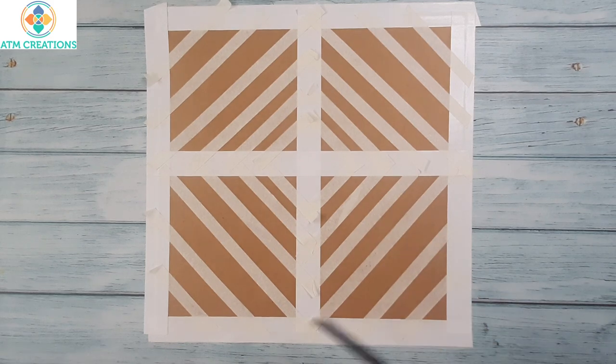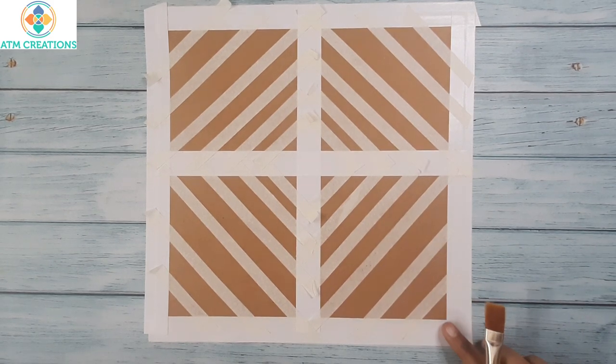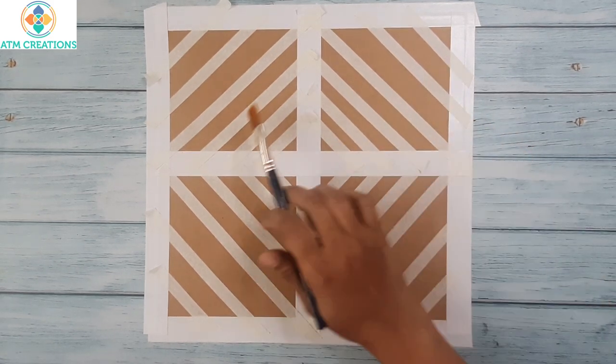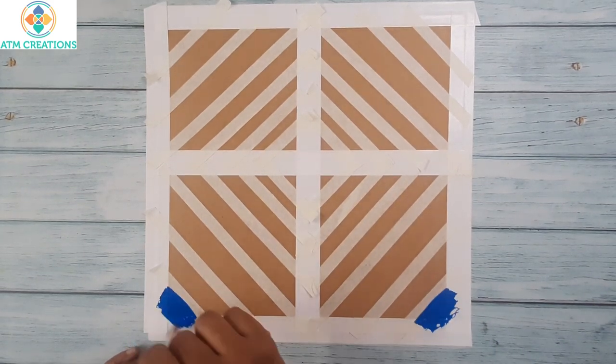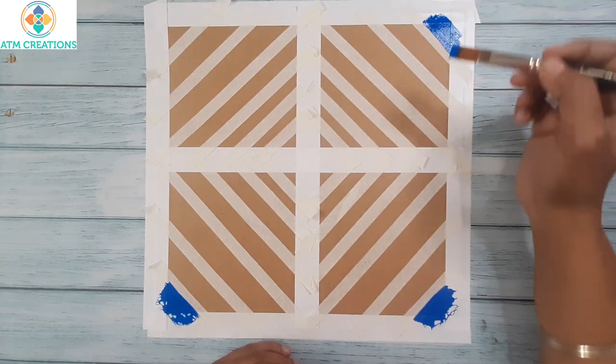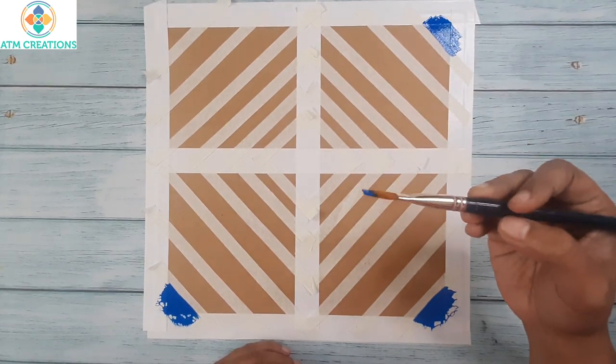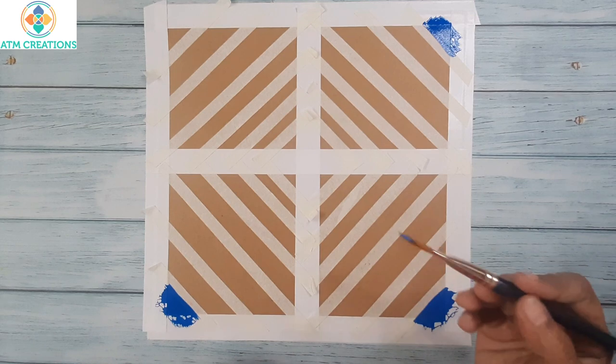Once the masking tapes are placed, you can start painting. Now I'm going to paint this corner portion of each of these squares with Cerulean blue. I use acrylic colors and this is a flat brush number eight. You can use any kind of a flat brush, whichever is convenient to you.